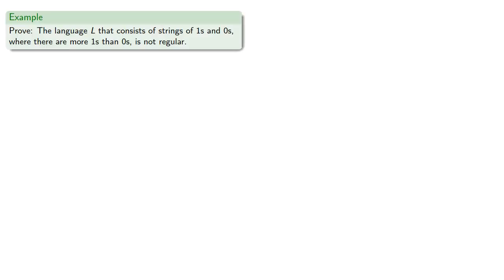And in fact it's pretty easy to find one. Let's consider the language that consists of strings of 1s and 0s where there are more 1s than 0s, and we'll prove this is not regular. We'll do that by finding a pairwise distinguishable set. We can start with any string we want to, so let's start with the string 1.